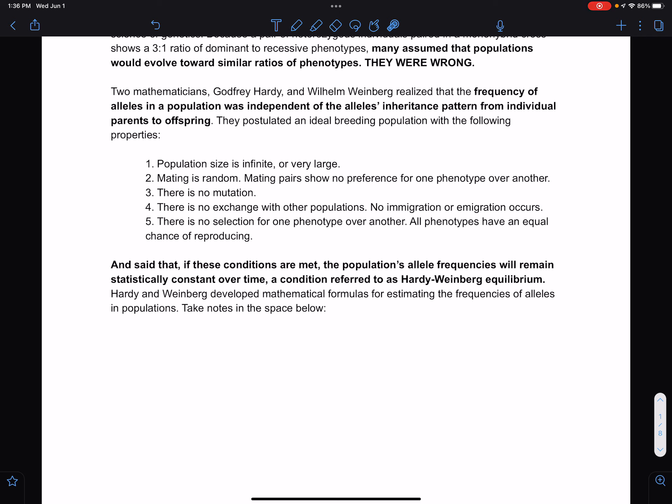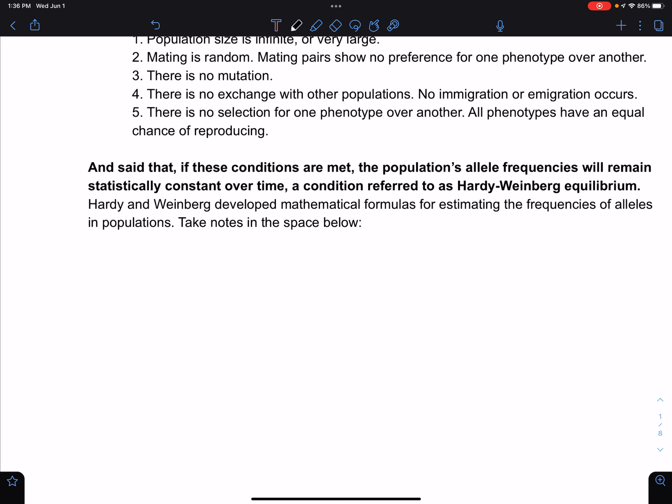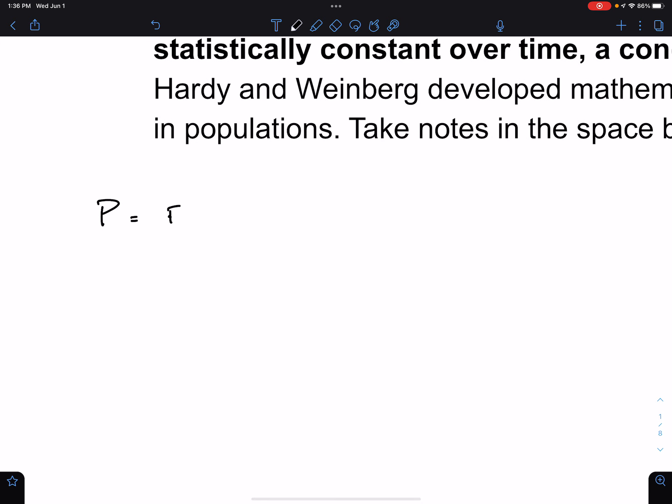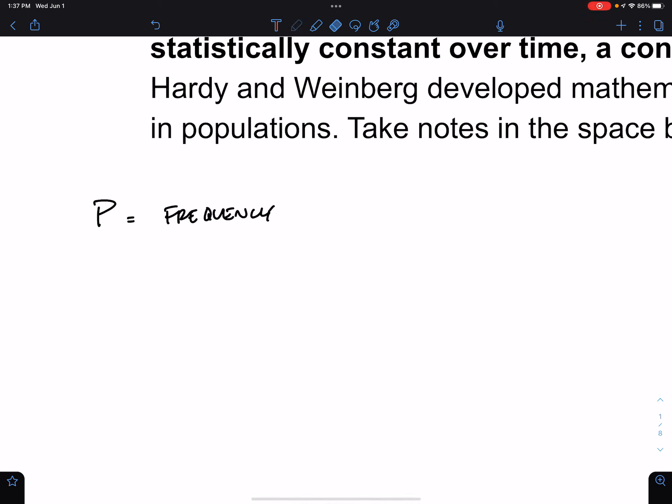I'm going to give you the mathematics of Hardy-Weinberg equilibrium right now. P is equal to the frequency of the dominant allele, and Q is equal to the frequency of recessive allele.